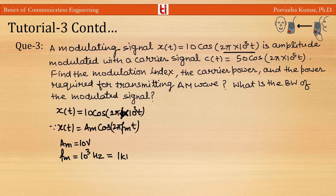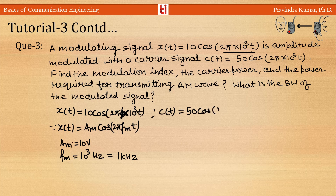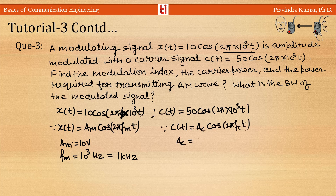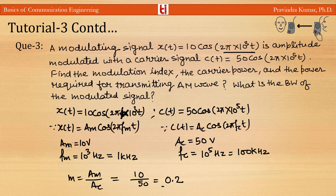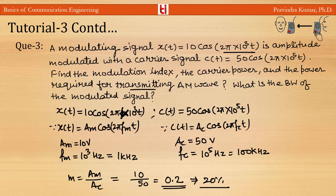From the carrier equation c(t) = Ac·cos(2π·fc·t), we get Ac = 50 volt and fc = 10⁵ Hz = 100 kHz. The modulation index m = Am/Ac = 10/50 = 0.2, or 20 percent.